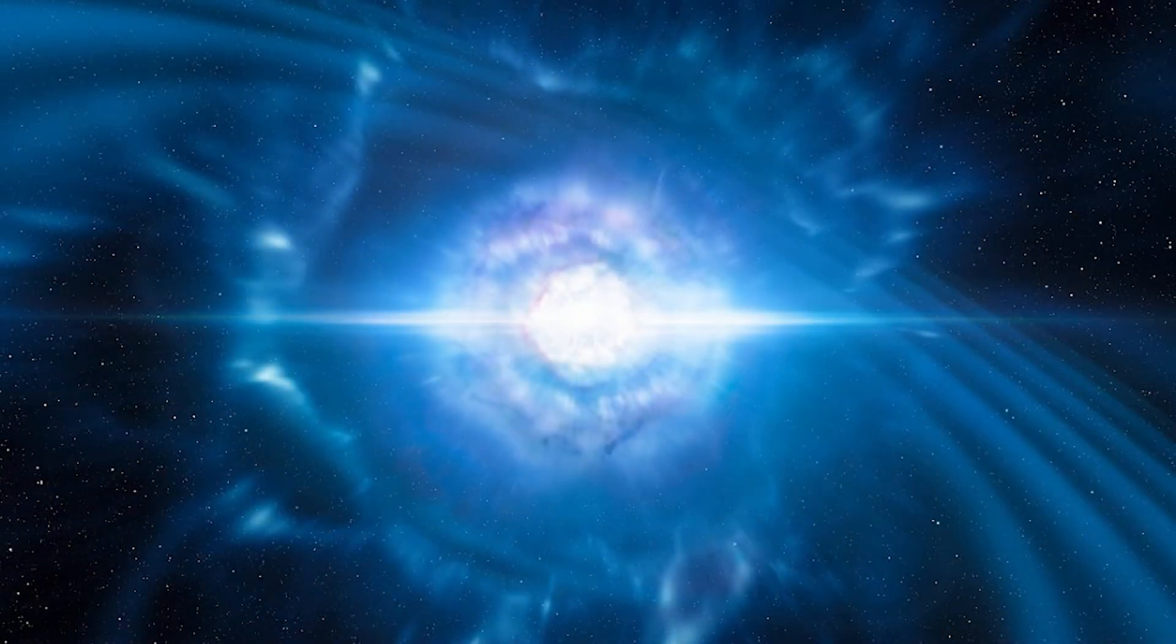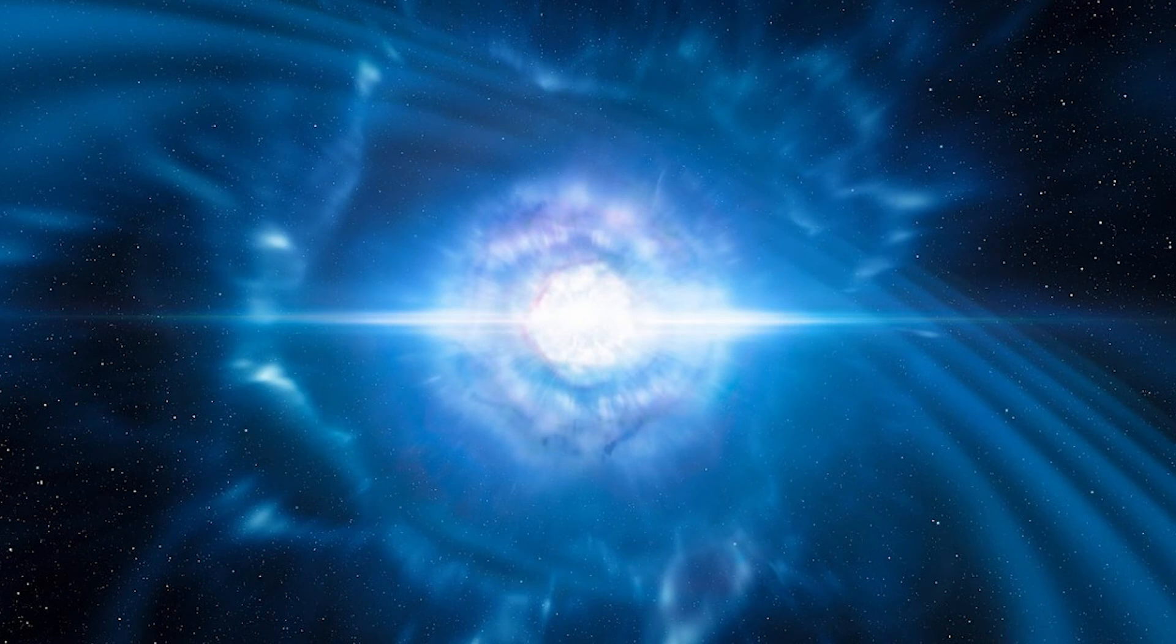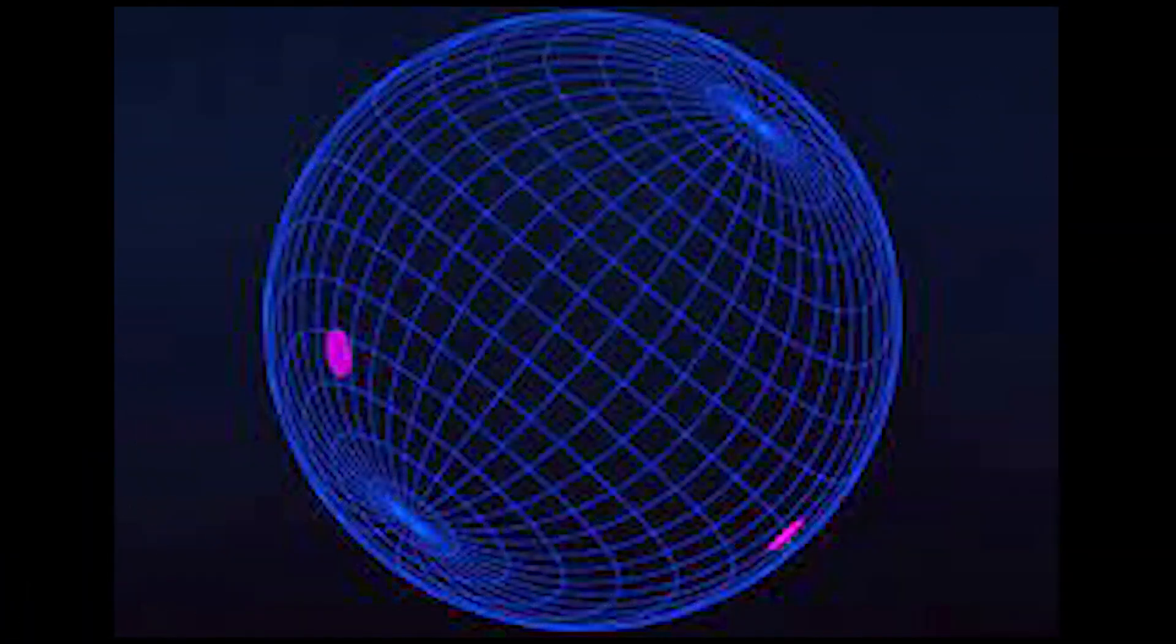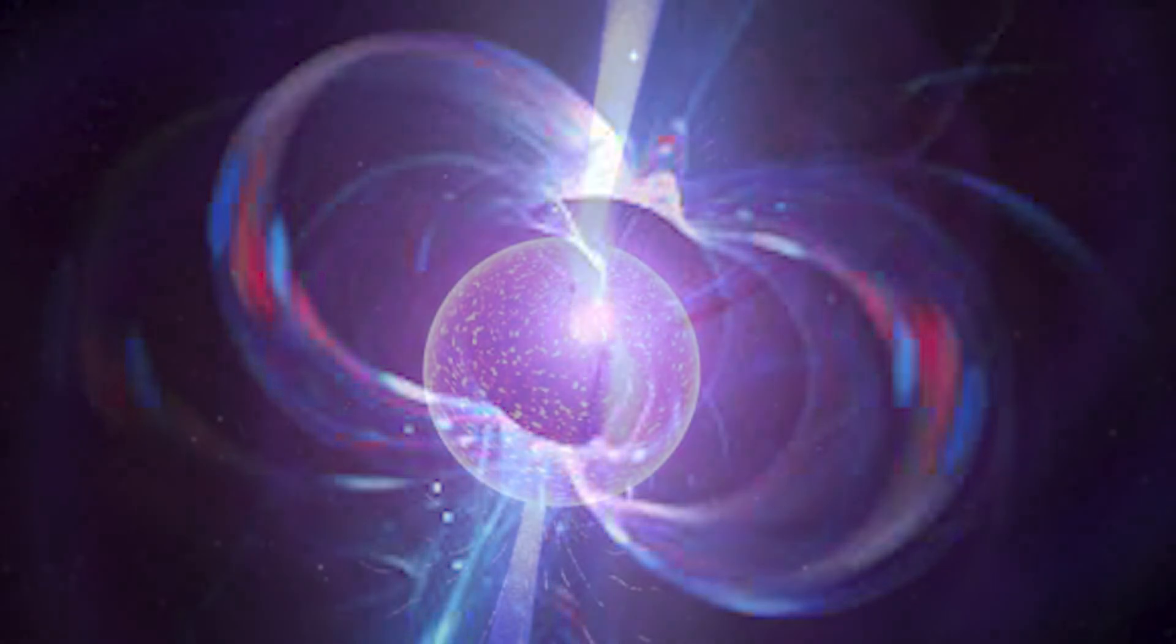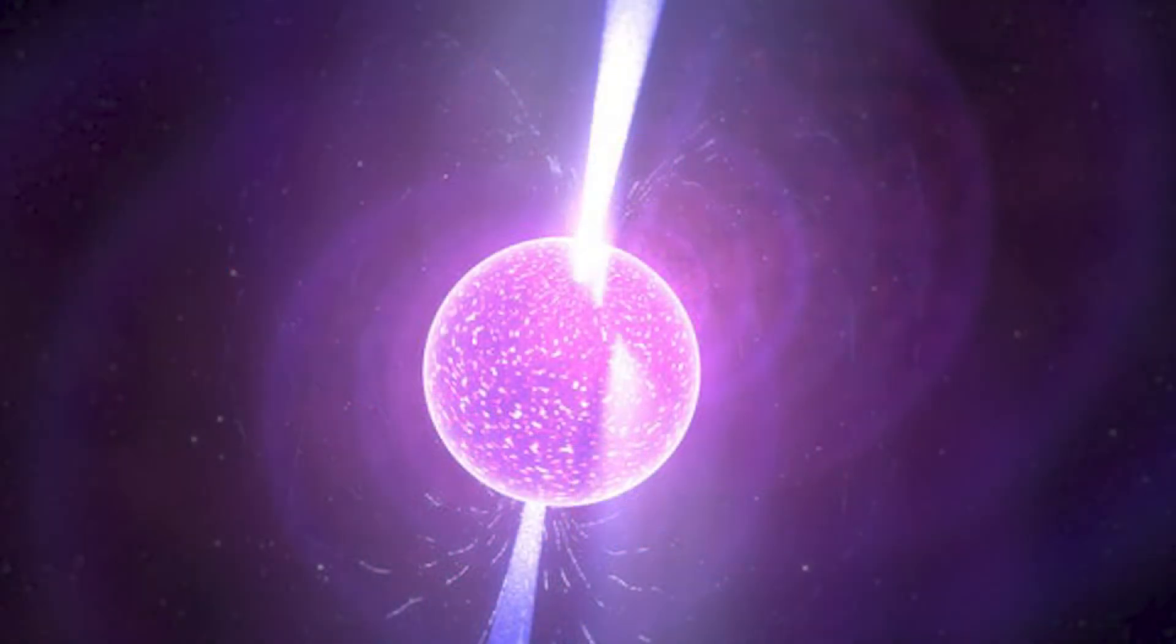Neutron stars are incredibly dense because they contain so much mass packed into such a small volume. The gravitation at the surface of a neutron star is immense. Neutron stars also have powerful magnetic fields which can accelerate atomic particles around its magnetic poles, producing powerful beams of radiation.